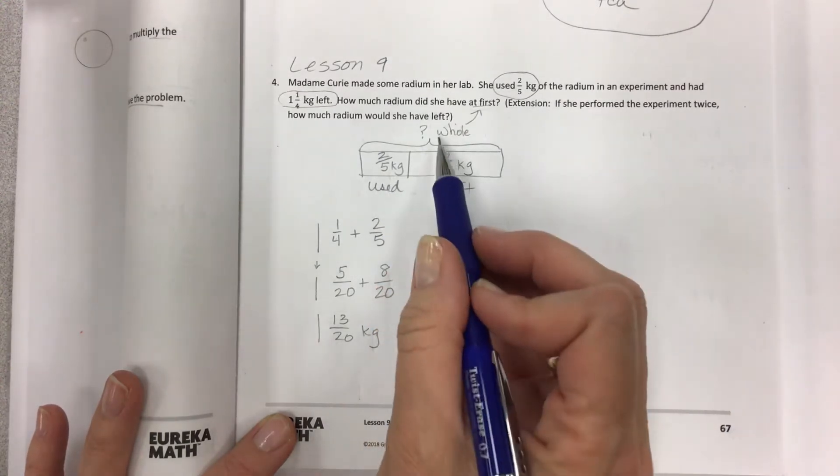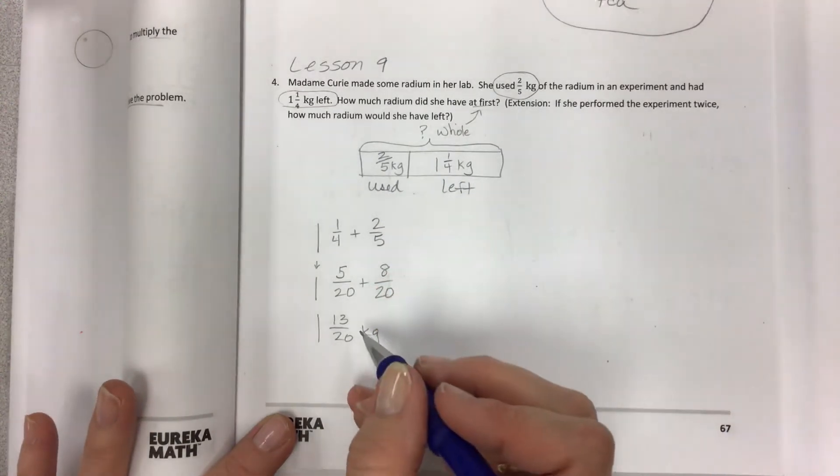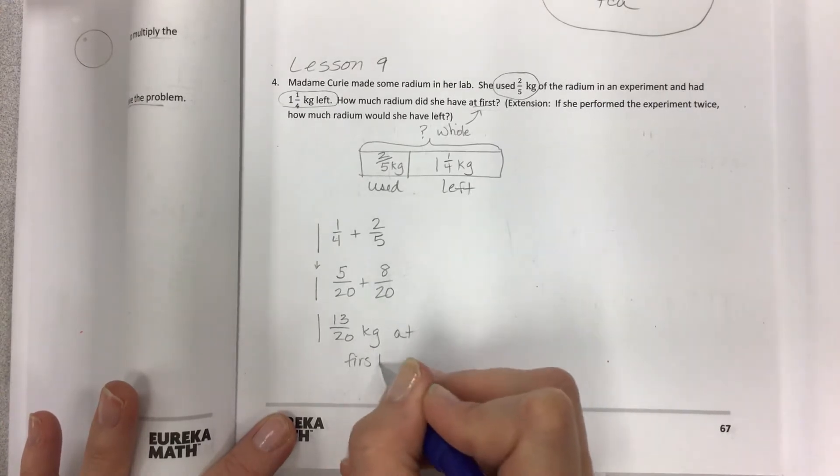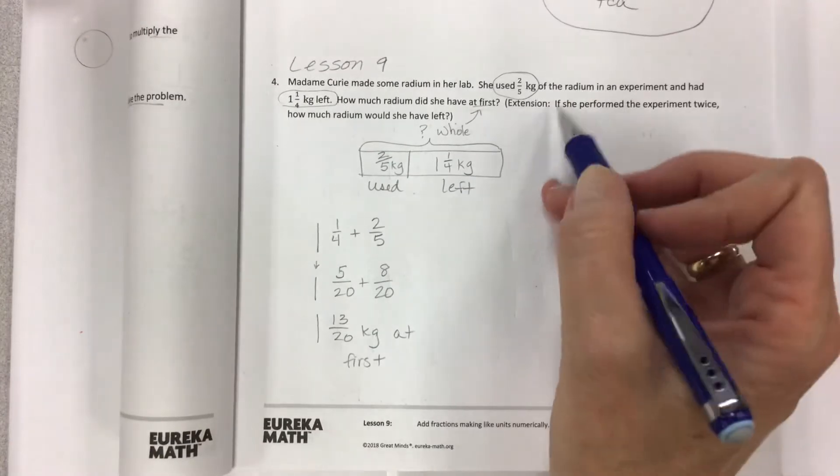At first, the extension says if she performed the experiment, the used part, twice, how much radium would she have left then?